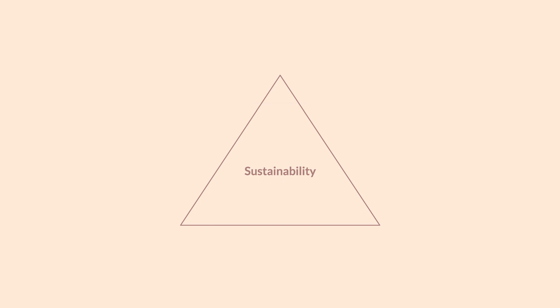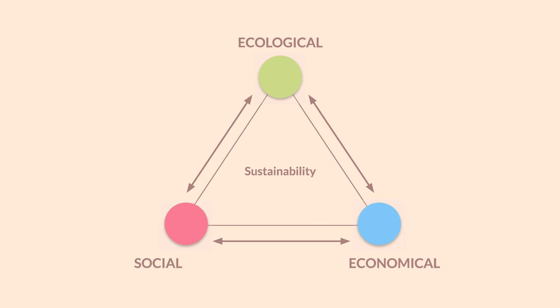Sustainability is always defined as a triangle of ecological, economical, and social. You can't be fully sustainable by just focusing on two of them. For example, being green and making money, but hurting people — what you're proposing is not fully sustainable and won't lead to long-term improvement of our ecosystem and society.